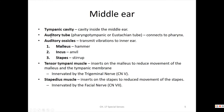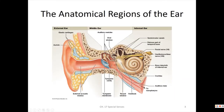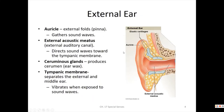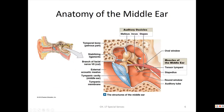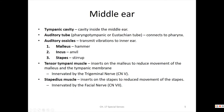Behind the tympanic membrane is the middle ear, which contains a cavity called the tympanic cavity — all that space behind the eardrum. There's an auditory tube, also called the pharyngotympanic tube or eustachian tube, attached to the pharynx — specifically starting in the nasopharynx — and going into the middle ear. This tube equalizes pressure in the tympanic cavity. It's called the pharyngotympanic tube because it goes from the pharynx to the tympanic cavity. It was named after Eustachio, so also called eustachian tube or auditory tube.